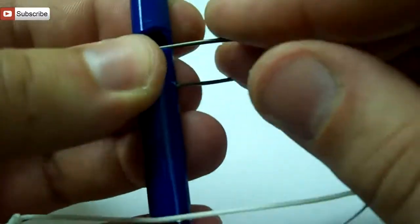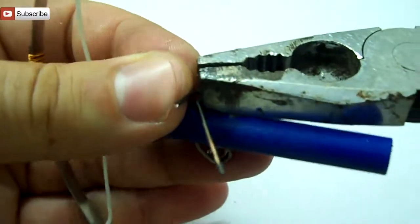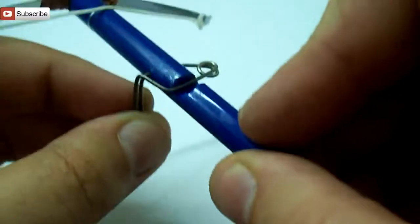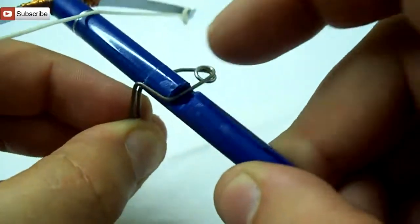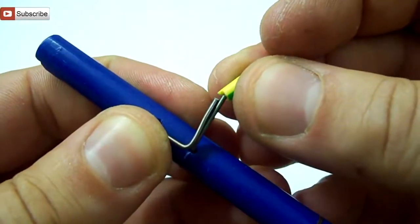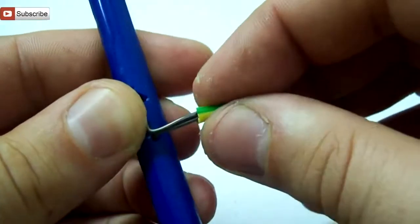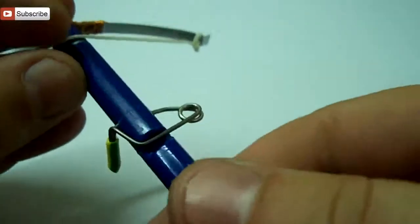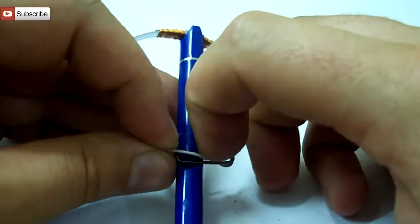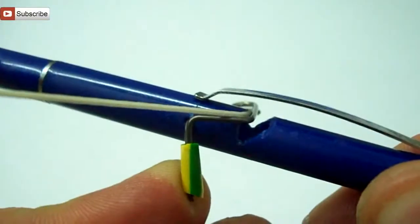The trigger is made out of a metal safety pin. It's a very simple design and works every time. Now I'm testing the crossbow before adding the wooden handle.